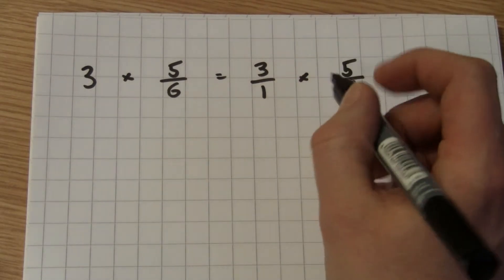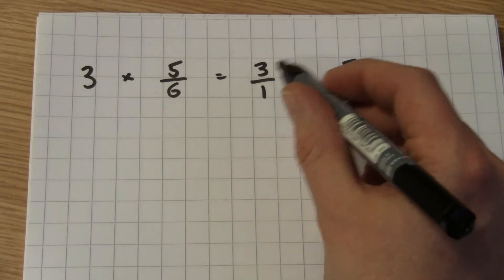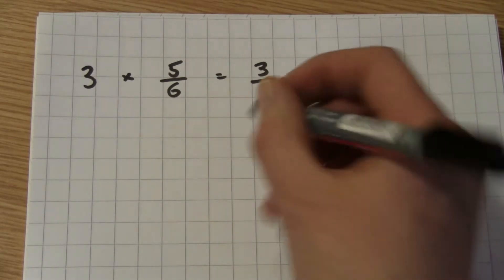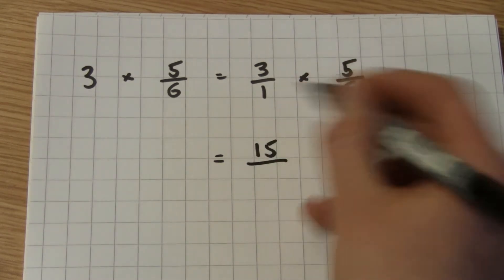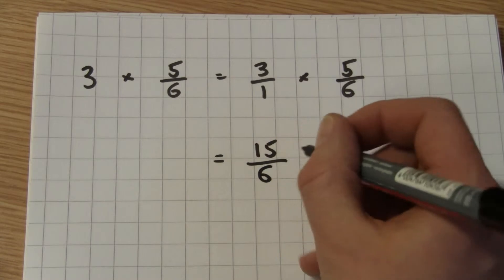Now, we've looked at this before, we know that to multiply fractions, we multiply the numerators and then the denominators. So 3 multiplied by 5 is 15, 1 multiplied by 6 is 6.